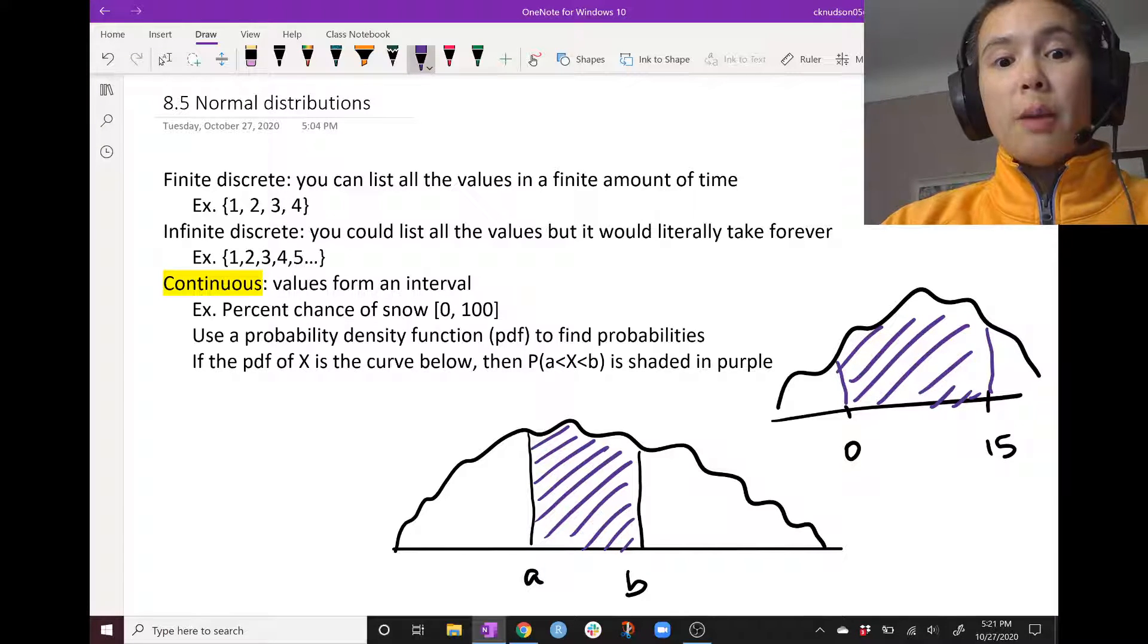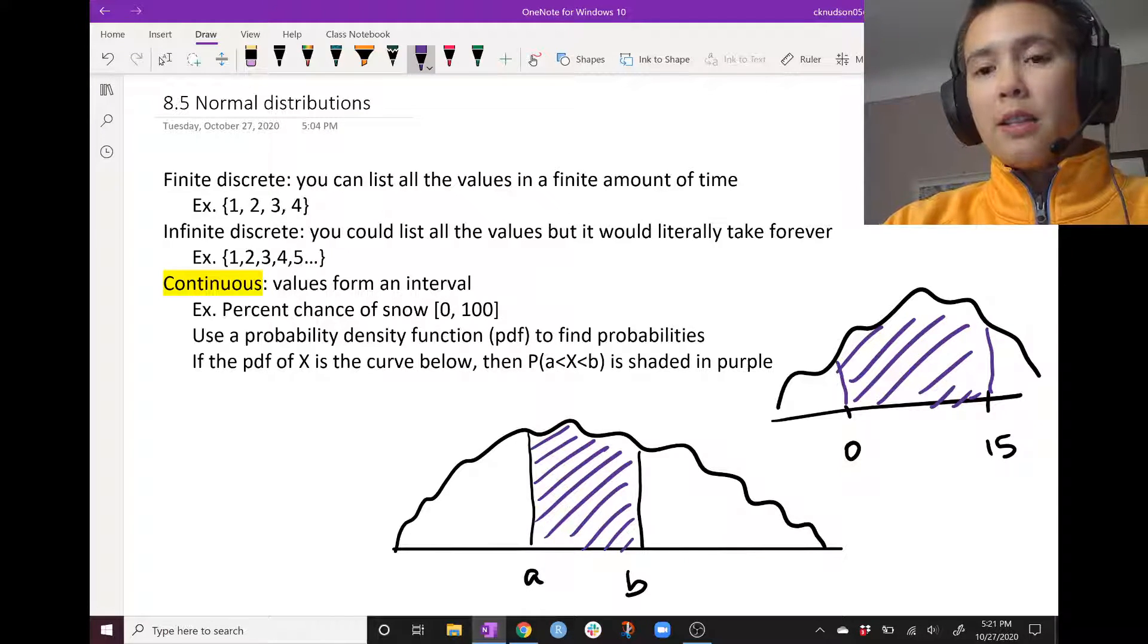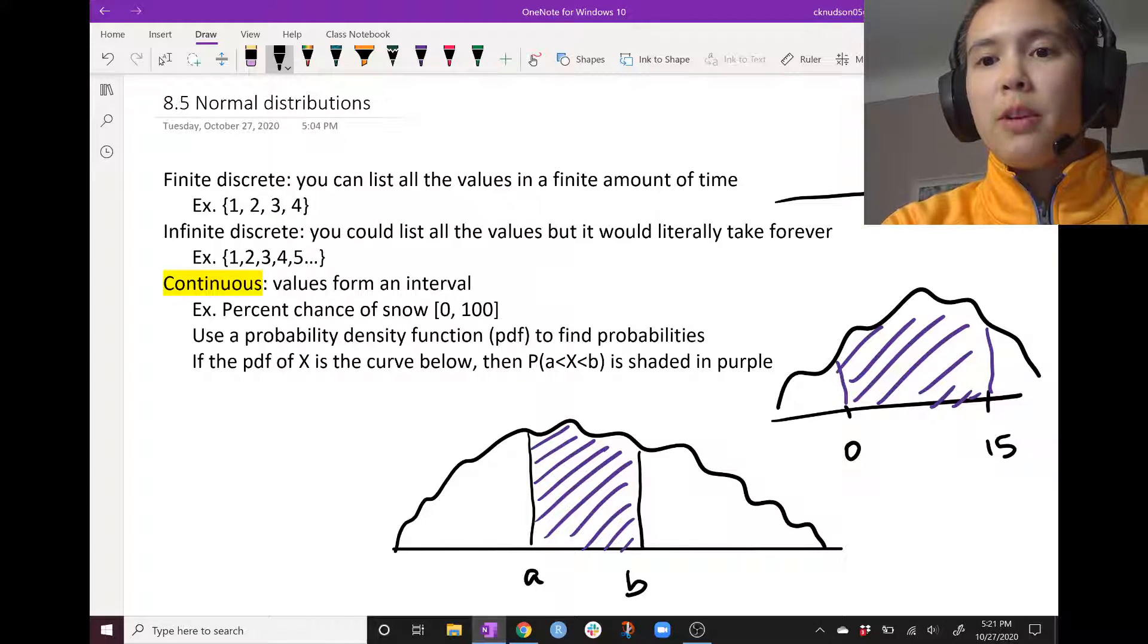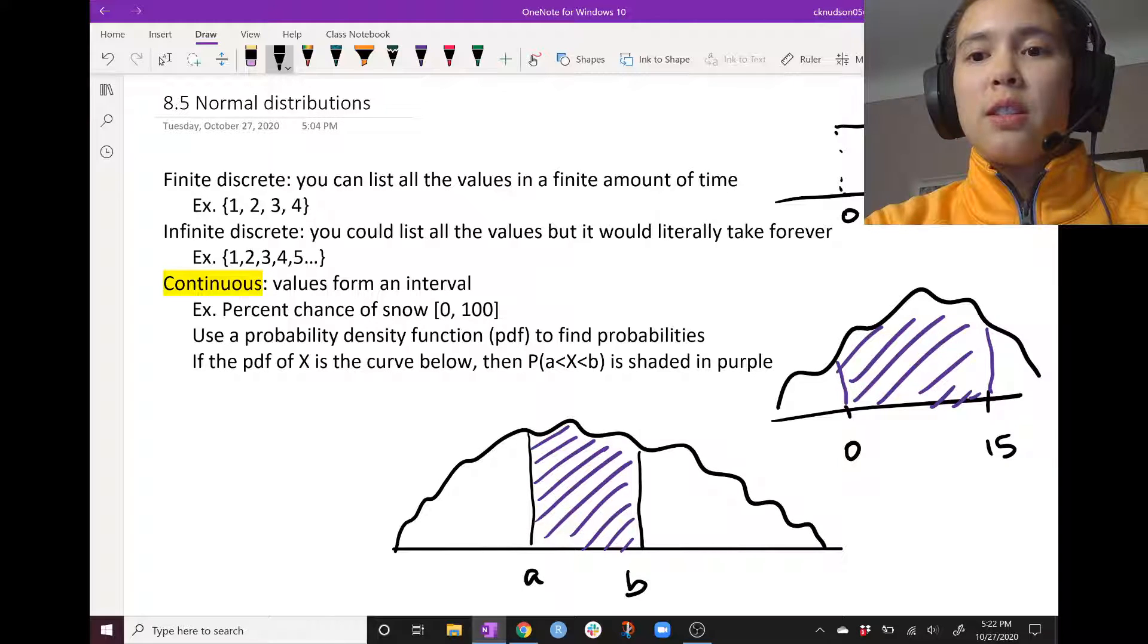So if we have a pretty nice looking PDF, then this is pretty easy to do. So for example, if we just have what's called a uniform PDF, then we can just take the area under it and the area is just a rectangle.